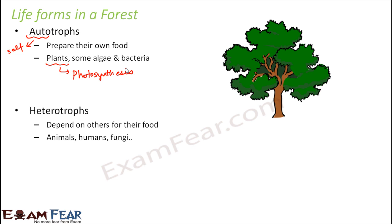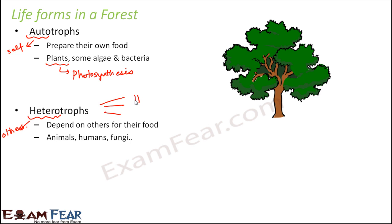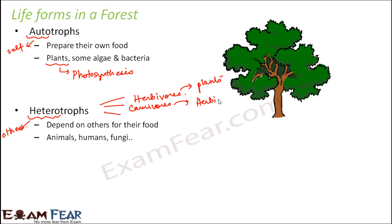The next category of life forms are the heterotrophs. Hetero means those who depend on others, so they depend on other organisms for their food. All herbivores and carnivores come under heterotrophs. Herbivores are heterotrophs because they depend on plants for their food. Carnivores are also heterotrophs because they depend on herbivores, which in turn depend on plants.